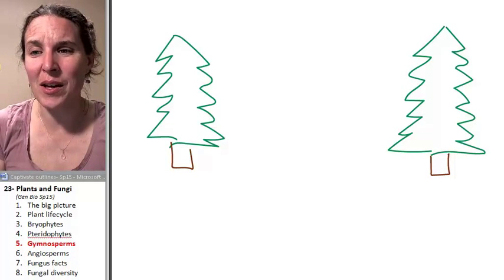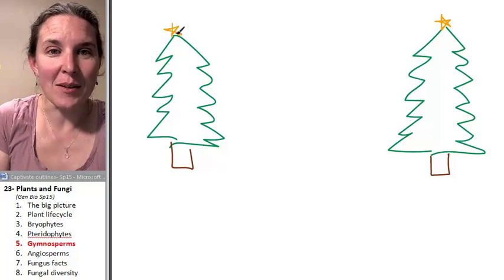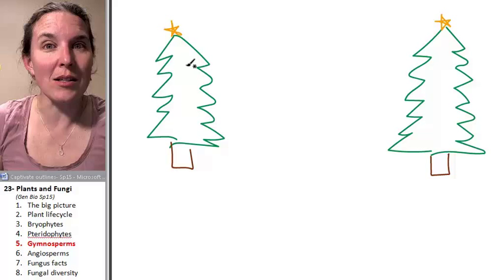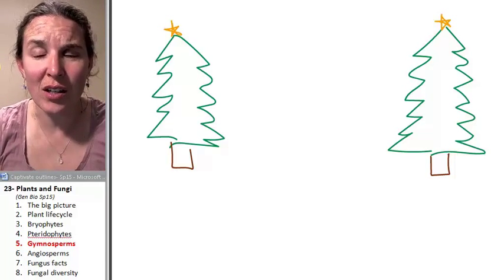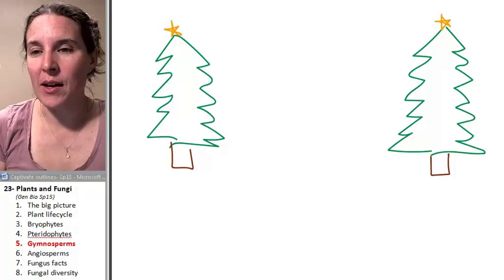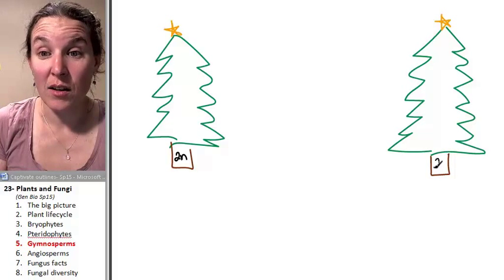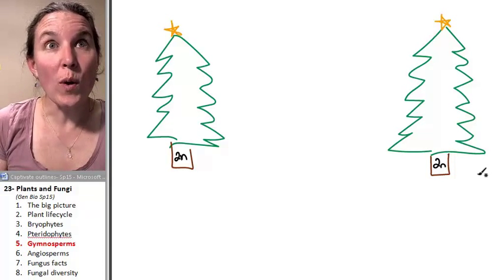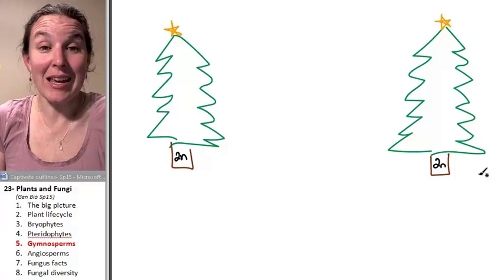And you know what? I can't help it. I'm feeling a little festive right now. Yeah, we got to have some stars on these trees because we're about to change the world. All right. These guys are diploid. They are sporophytes. So just don't forget it. And so we still have an alternation of generations, but we have this seed thing to talk about.